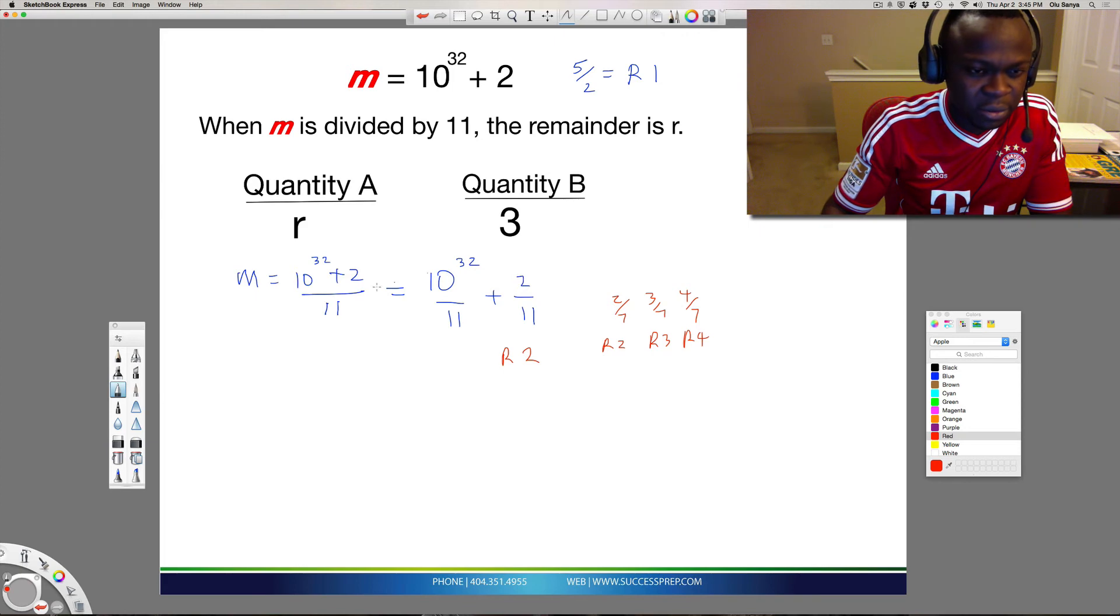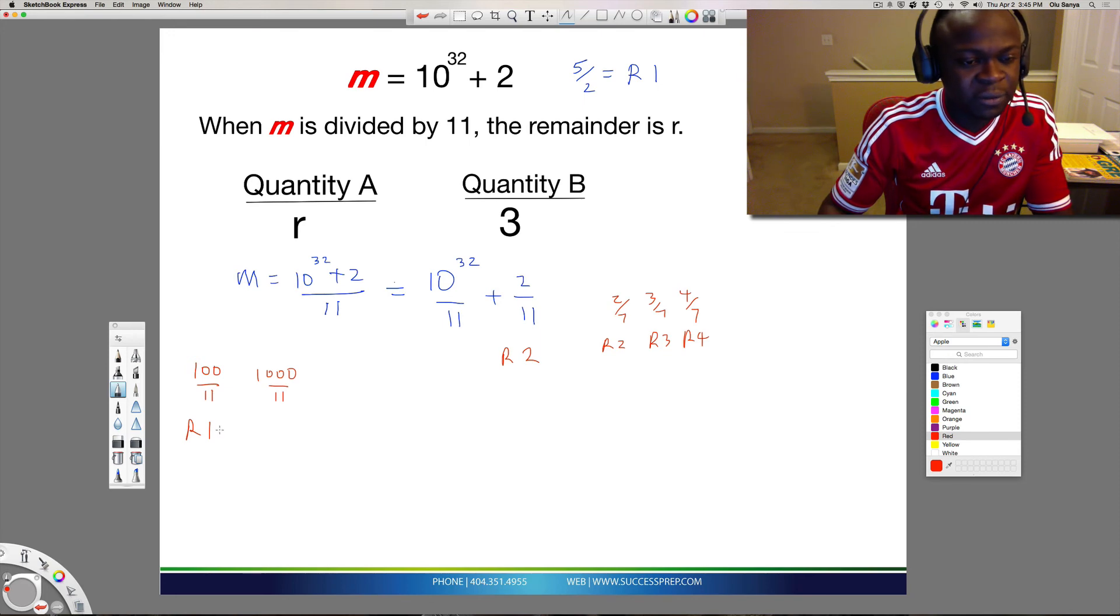So when I see 10 to the 32, I'm thinking that's just in the same family as just 100 over 11 or say like 1,000 over 11. So the question is, if 11 goes in 100, what's the remainder? Well, you can see that 11 going in 100, it will go as far as 99. As far as 99, but the remainder there is 1 because if it goes as far as 99 and we have 100, then the remainder is 1. It's just 1 left over.